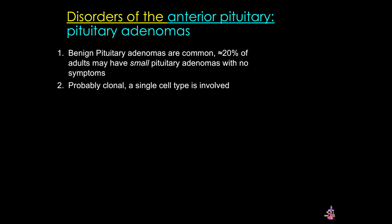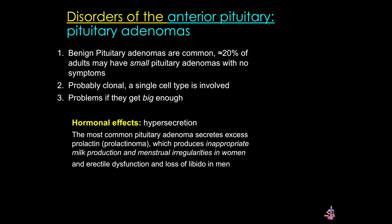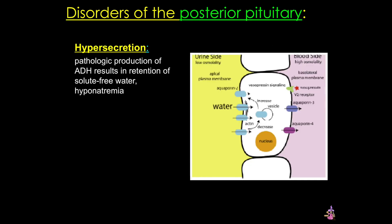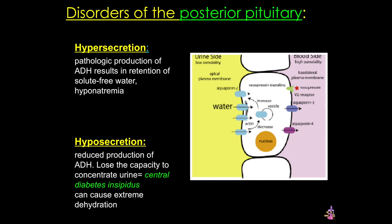Benign pituitary adenomas are common and likely clonal. Although benign, these adenomas can cause problems if they get large enough, primarily from secretion of excess hormone — which hormone depends on which cell types are affected. A prolactinoma, a common adenoma, can produce inappropriate milk production in women and other issues in men. These tumors can also have mass effects, compressing brain structures such as the optic nerve and causing headaches. Disorders of the posterior pituitary usually involve ADH: overproduction leads to retention of solute-free water, or hyponatremia, while hyposecretion leads to inability to concentrate urine — central diabetes insipidus — which can cause extreme dehydration.